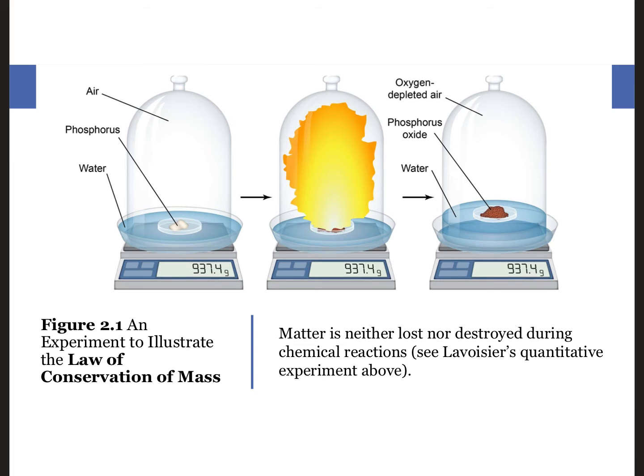However, Antoine Lavoisier demonstrated that the ignition of phosphorus using a focused sunbeam in a humid, sealed container showed zero mass loss, confirming that the materials were not lost, but transformed from one form, oxygen gas and solid phosphorus, to another, solid phosphorus oxide. This quantitative experiment led other scientists to carry out experiments to confirm his conclusions.